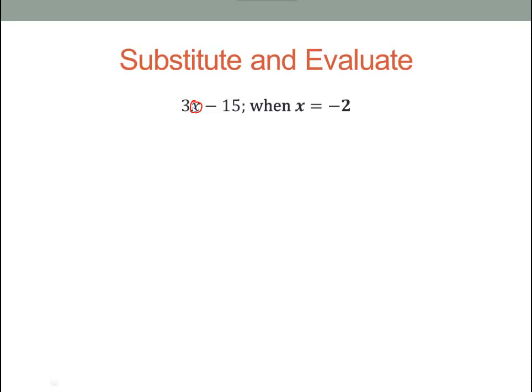So 3x with no symbol in between, no operation in between, that means multiplication. That means 3 times negative 2 minus 15. So that's the substitution step. And after we substitute, we will evaluate by using our order of operations.